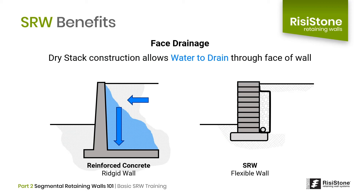Unlike reinforced concrete or soldier pile walls, SRWs allow water to percolate through the face, which helps prevent hydrostatic pressure from building up behind the wall. With a rigid reinforced concrete wall, water is contained behind the wall unless weep holes have been provided. With an SRW, because the face is dry stacked without mortar, water can move through the face and percolate out of the wall system. Having said this, we always want to ensure a well-designed and well-constructed drainage system behind the SRW so we do not have to rely on this.